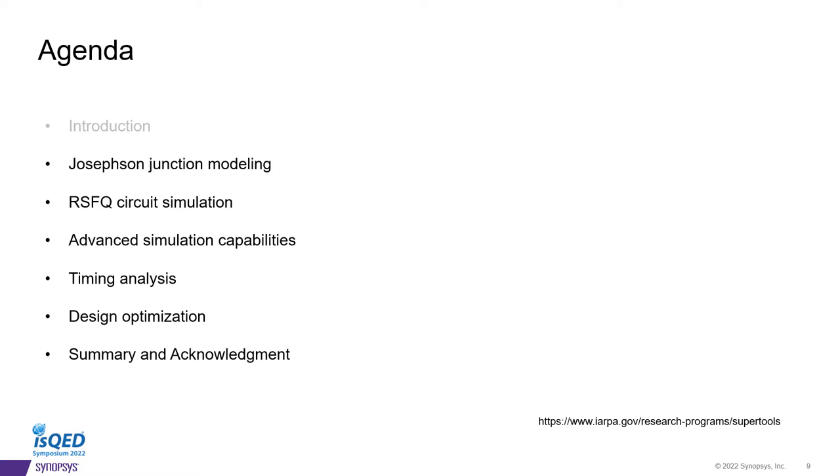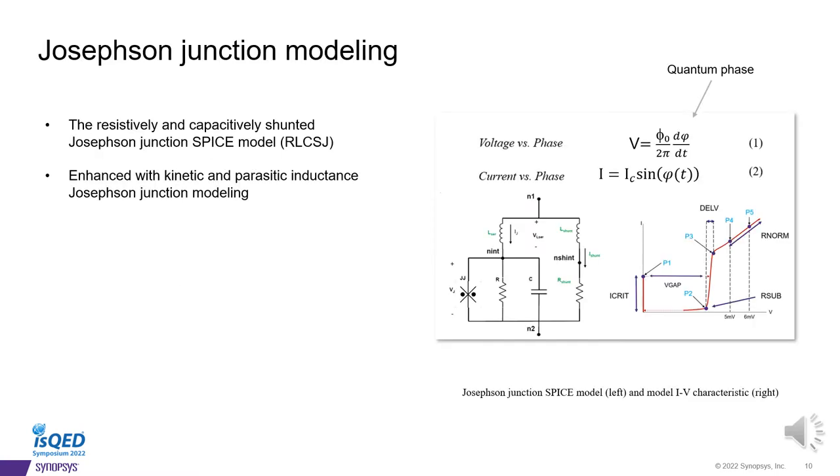For these next sections, I will be discussing Josephson Junction's modeling. Here are the Josephson Junction's device models and IV characteristics. The two equations represent voltage and currents to quantum phase relation. This is the classical Josephson Junction model. We call it RLCSJ model. There is a nonlinear component for the junction. We use a cross as the symbol. And there are resistor, capacitor, inductance components, as well as shunt components. The IV curve, of course, is very different than CMOS. Because there is a superconducting stage, you start with a critical current at zero voltage, also known as Icrit.